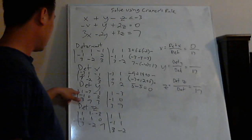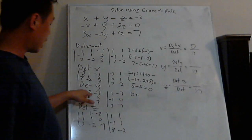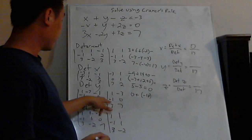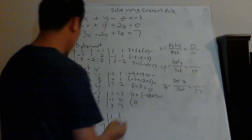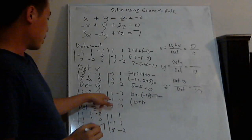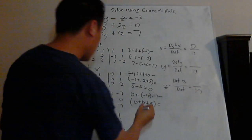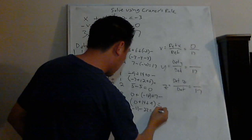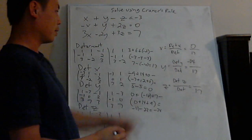Now for determinant y. The first product is 0 because anything times 0 is 0. Then negative 3 times 2 times 3 gives negative 18. Negative 1 times negative 1 times 7 gives positive 7. Then subtract: 3 times 0 is 0, 7 times 2 times 1 is 14, and 3 times negative 1 times negative 3 is positive 9. So: 0 - 18 + 7 = negative 11, minus (0 + 14 + 9) = minus 23. That gives negative 34. So determinant y is negative 34.